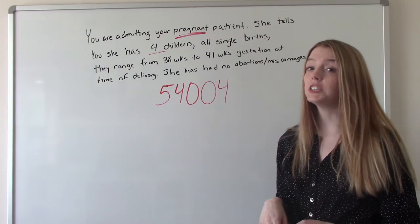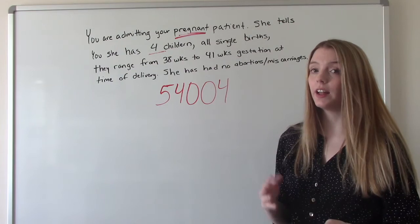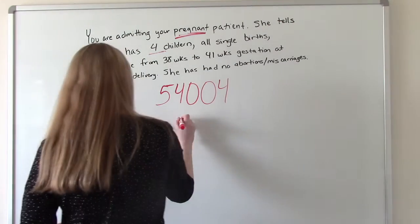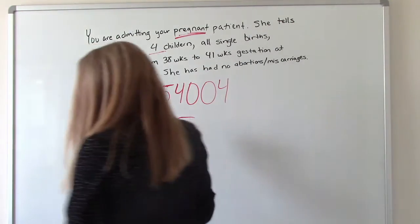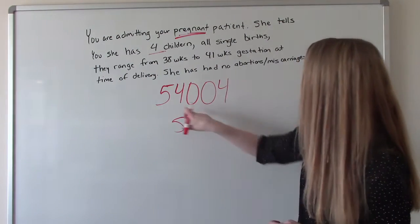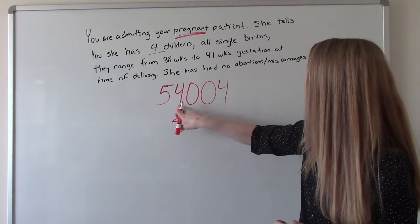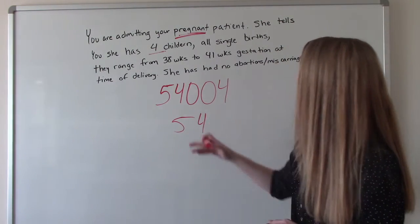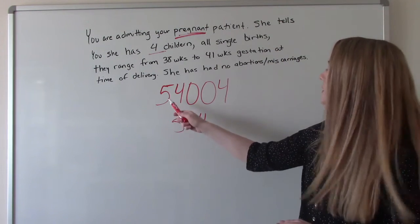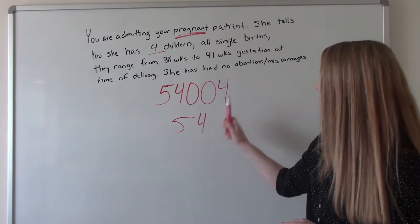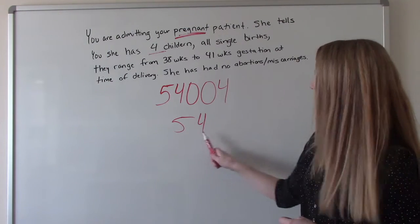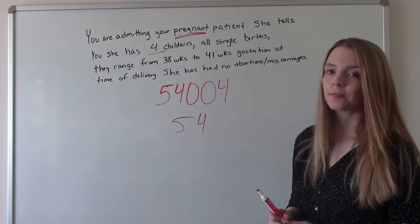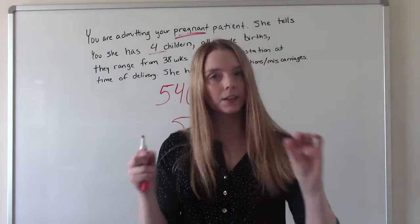What about her GP, her gravida and her para? So the G again is the same. It's the five. And then our P is the combination of our term and preterm, right? So that's four. So her GTPAL is five, four, zero, zero, four, and her GP is five, four.